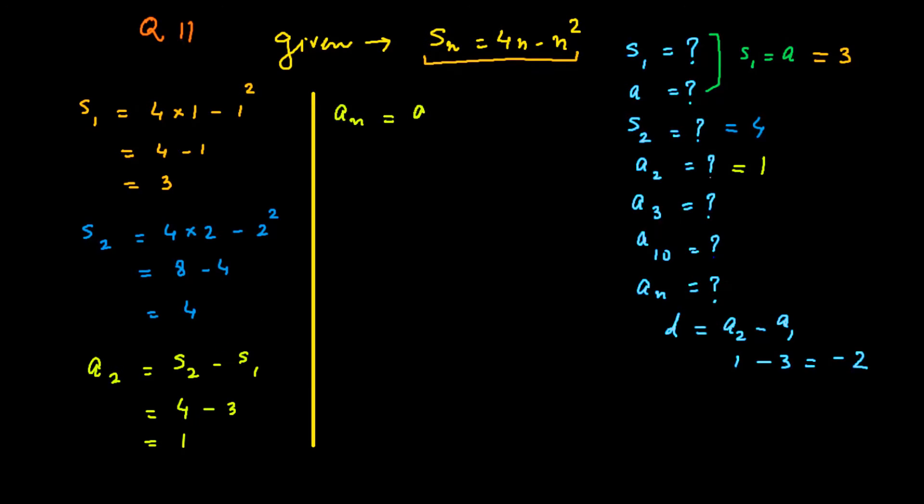An equals a + (n-1)d. Putting the values, 3 + (n-1)(-2), or 3 minus 2n plus 2. So it is 5 minus 2n. The value of an equals 5 minus 2n.